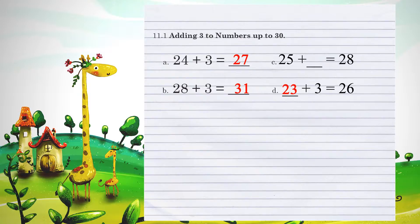Let's look at example C. 25 plus what number equals 28? Again, you can use your number line theory here and go 25 to 26 to 27 to 28. How many times did I move? Three times.